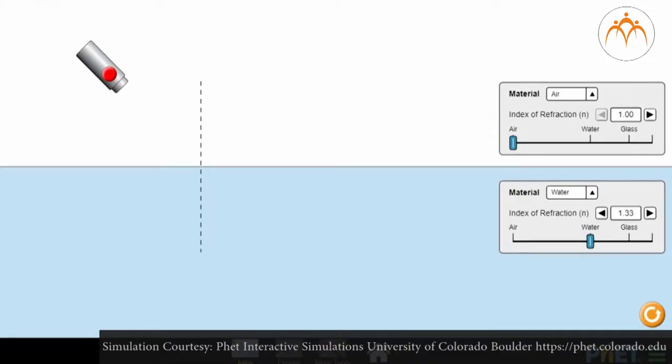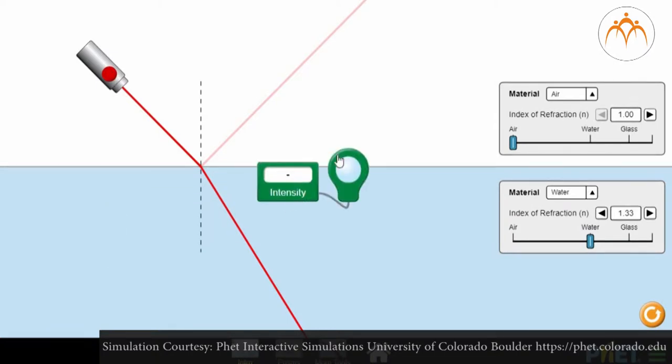The torch is our light source. It is placed in air. As light travels from air to water, most of the light gets refracted while some of the light gets reflected.